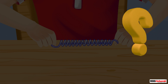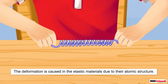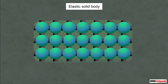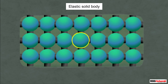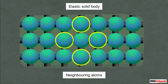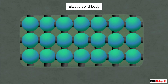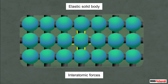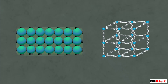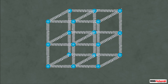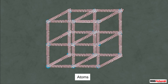Do you know why this deformation is caused? The deformation is caused in these materials due to their atomic structure. Each atom or molecule of such a solid is surrounded by neighboring atoms or molecules. These atoms and molecules are bonded together by inter-atomic or inter-molecular forces and stay in a stable equilibrium position. This arrangement is similar to the model of a spring-ball system, where the balls represent the atoms and the springs represent the inter-atomic or inter-molecular forces.